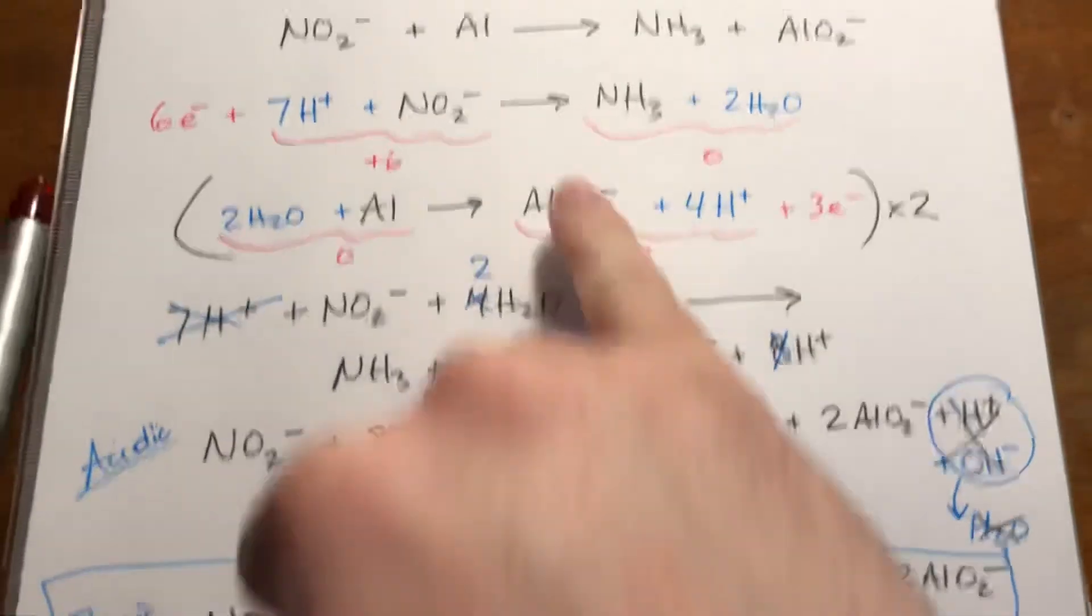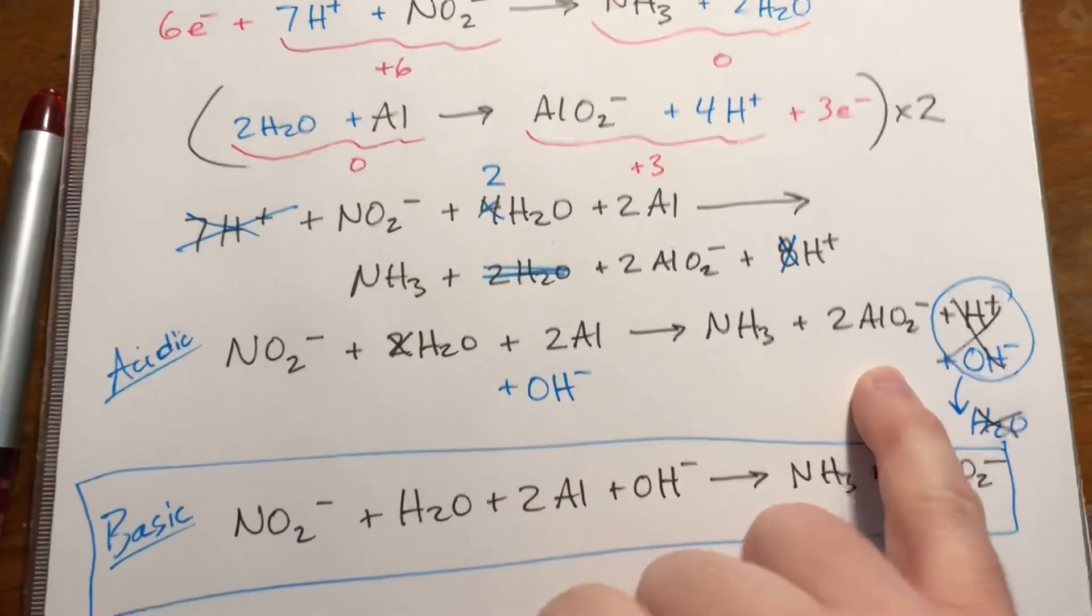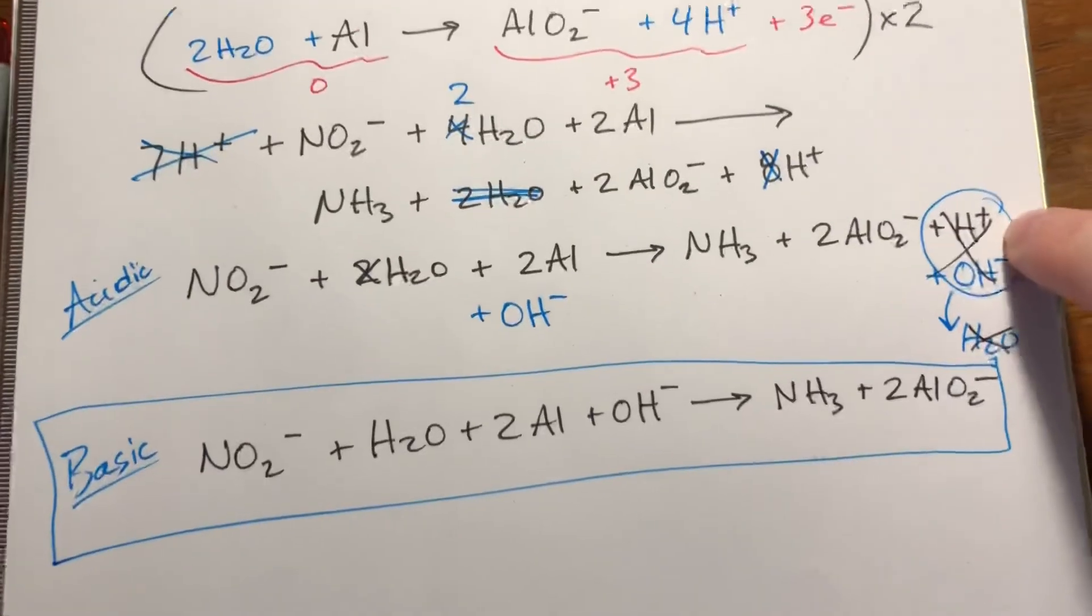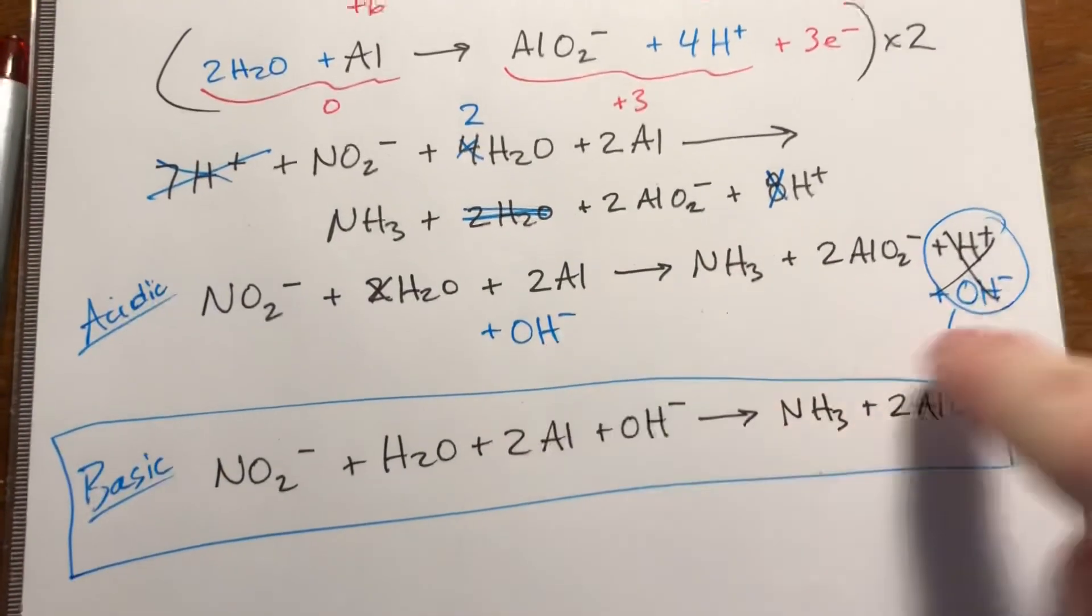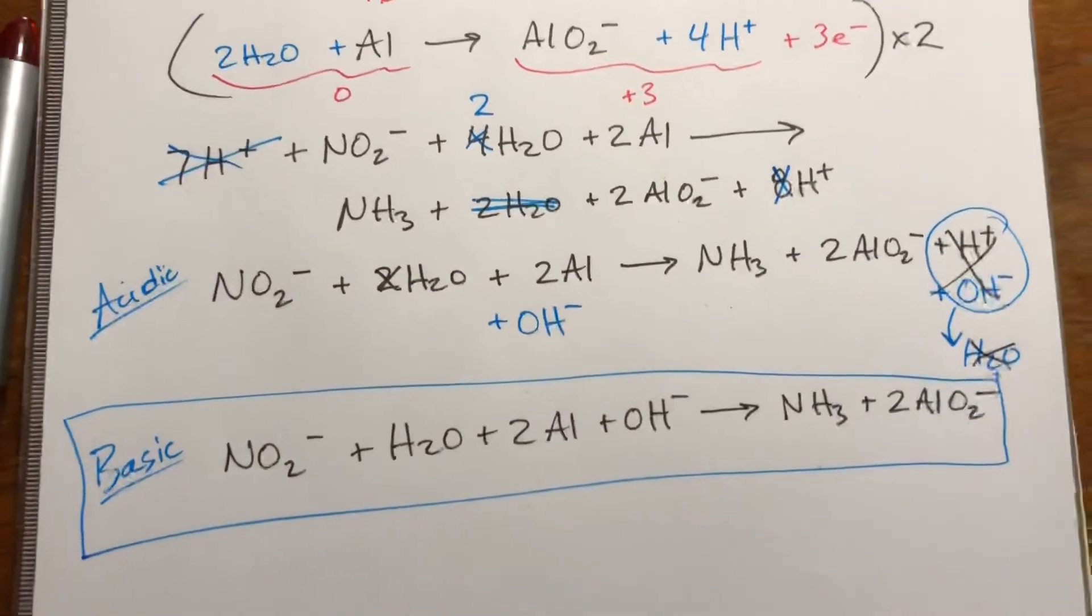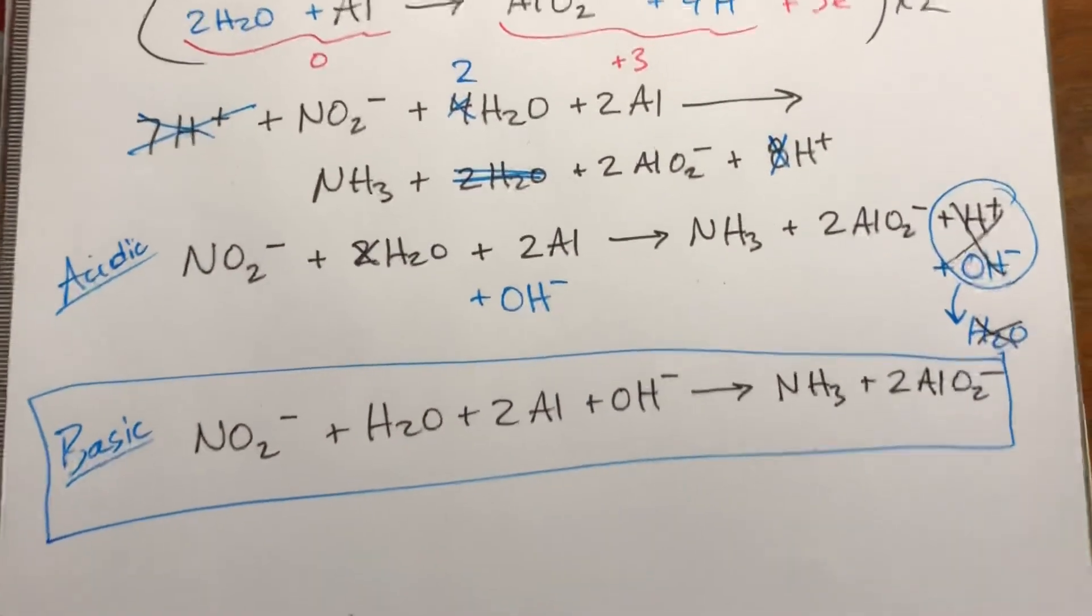So really, you just do it under acidic conditions, just like we did in the previous problem. The only additional part is at the very end, anywhere you have an H plus, you add that many OHs to both sides. H plus OH makes water, and then you have to cancel out any waters that are formed, and rewrite everything, and you should be good.